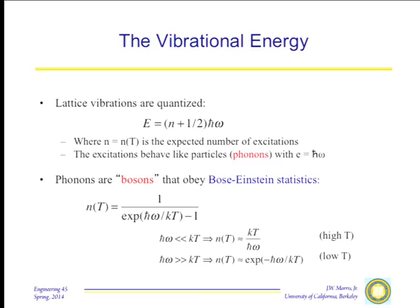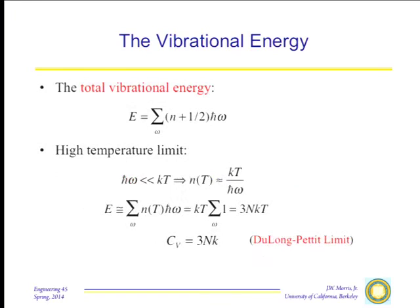n(T) is the occupation number: exp(-ħω/kT). High temperature looks like one limit, low temperature looks like another. To calculate the total vibrational energy, you sum over all frequencies of all the phonons — the sum over all phonons of (n + 1/2)ħω. In the high-temperature limit, where ħω is much less than kT, n(T) is just kT/ħω, and this number is much greater than one half.